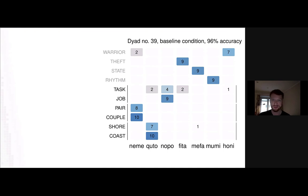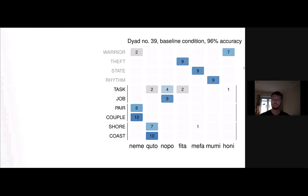Here's a result from one game — cherry-picked to look nice, with 96% guessing accuracy, a very good dyad. In this case, the dyad co-lexified shore and coast, using the signal 'kuto' for both. These numbers in the boxes show how many times a signal was used to signal a given meaning. But for 'written,' they decided it gets its own unique signal, which happens to be 'mumumi.'